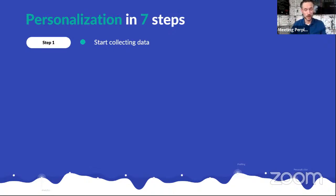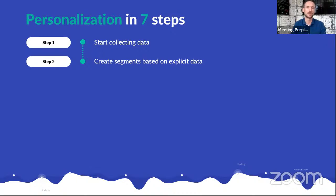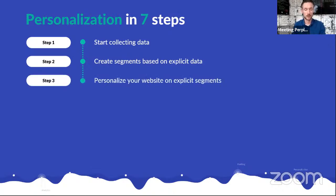You can start really simple and make it complex along the way. The most important step is data — we need data to start personalizing and to measure whether the personalization has any effect. When you install U-Marketing Suite, it starts collecting data immediately. In step two, we're going to create segments based on explicit data — for example, we're going to create segments for desktop or mobile users, or for people visiting the website after six in the afternoon. Explicit data is true or false, and we create segments for that.